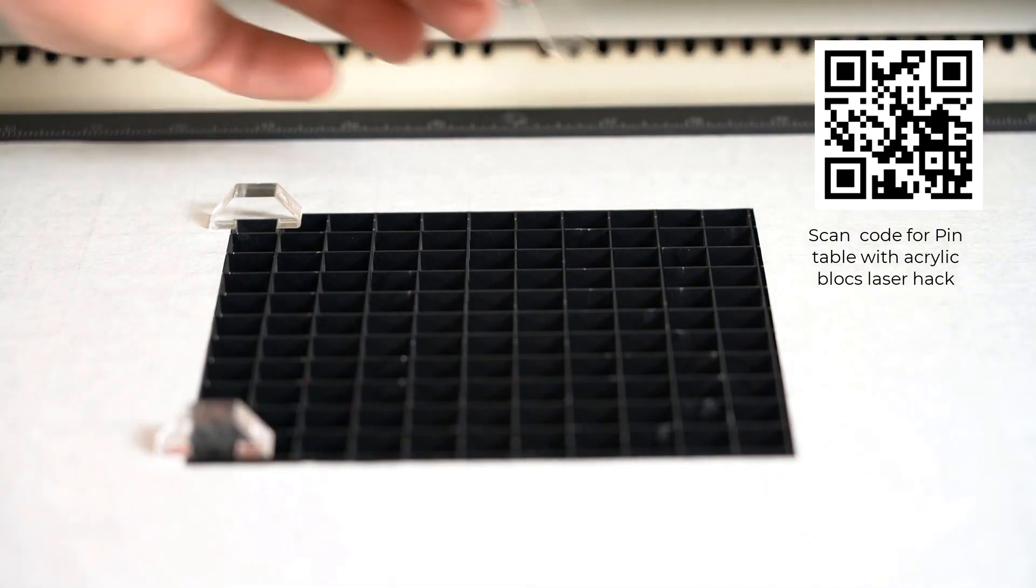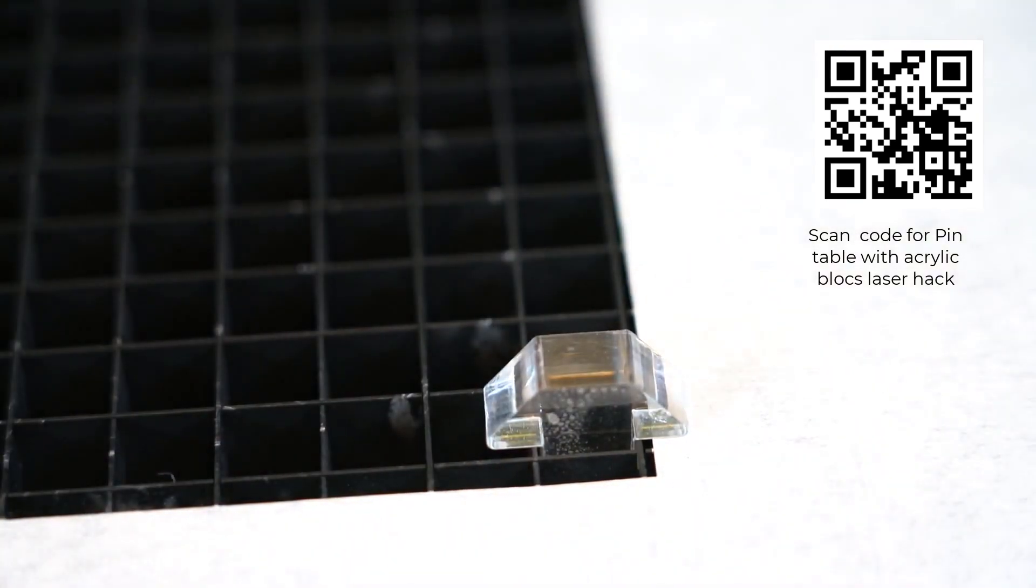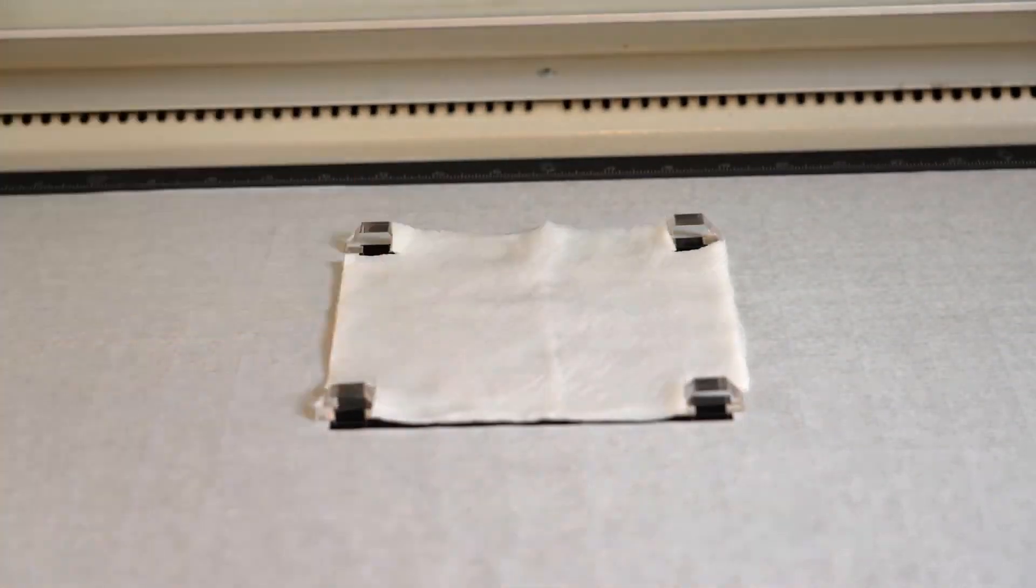Now let's run the same project again using cut acrylic blocks to both reduce cutting table reflection points as well as to best demonstrate how our wet paper towels work to reduce flare.